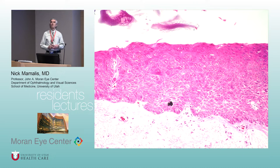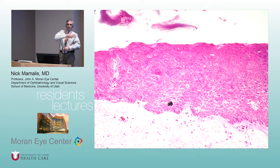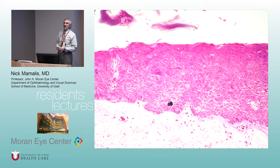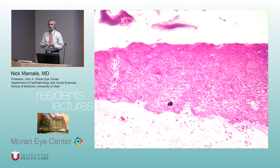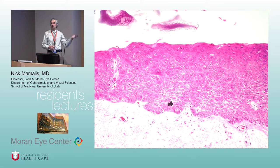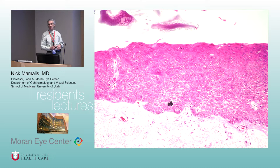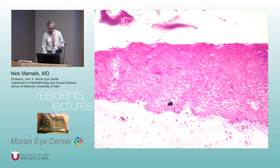This is called CIN — Conjunctival Intraepithelial Neoplasia. We rate it as mild, moderate, or severe depending on what percentage of the epithelium has dysplastic cells. Mild is the lower third, moderate is two-thirds, severe is more than two-thirds. By definition the basement membrane is still intact.